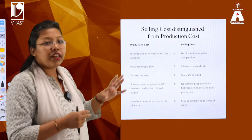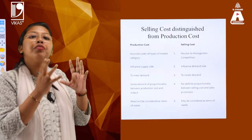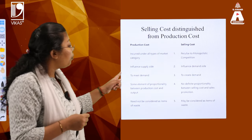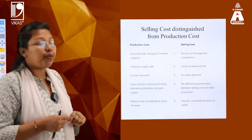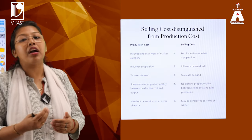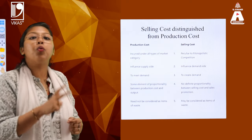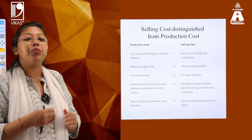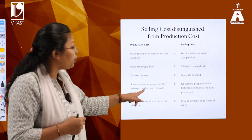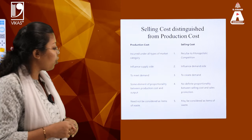Production influences the supply side — production is totally dependent on supply. But the demand side is more impacted by selling cost, because I might change the demand of the consumer by advertising. To meet the demand is the task of production cost, but to create demand is the task of selling cost — because you are trying to create the demand. It is not 100% certain that demand will definitely be created; that is entirely the task of the seller and how they are carrying out their activity. There is some proportionate relationship between production cost and output, but no definite proportion between selling cost and production cost.